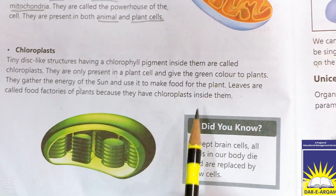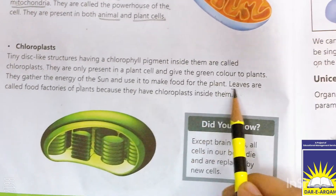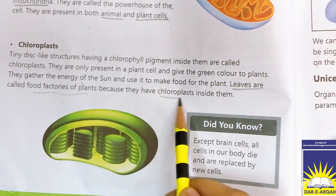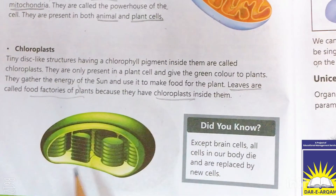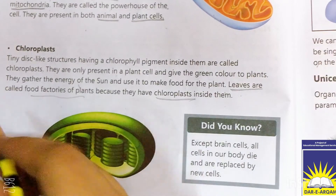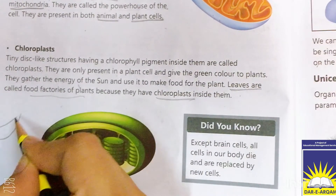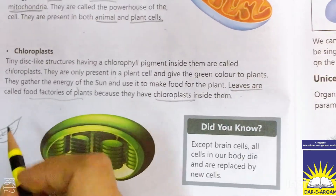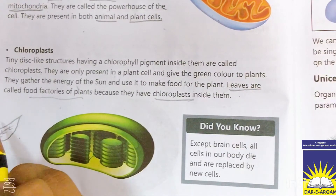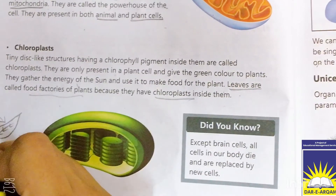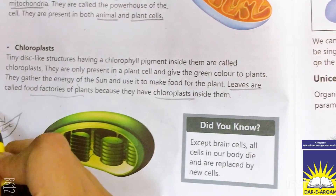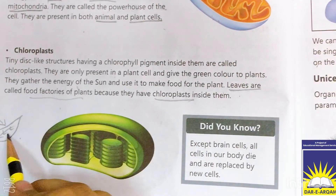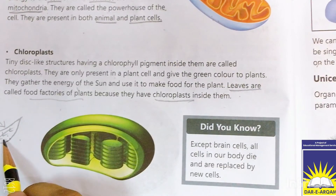Leaves are called the food factories of the plant because they have chloroplast inside them. Leaves کو plant کی food factory کہتے ہیں کیونکہ ان کے اندر chloroplast ہوتا ہے جو green pigment دیتا ہے۔ جب sunlight یہاں پڑتی ہے تو chloroplast کی وجہ سے یہ آسانی سے اپنا food خود بنا لیتے ہیں۔